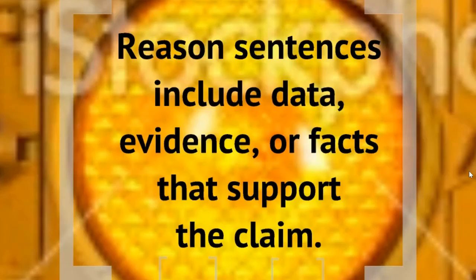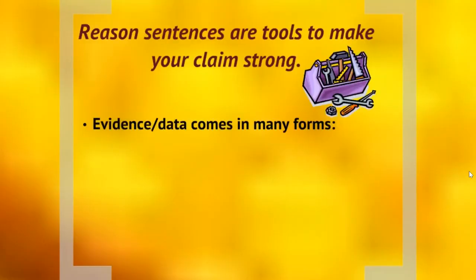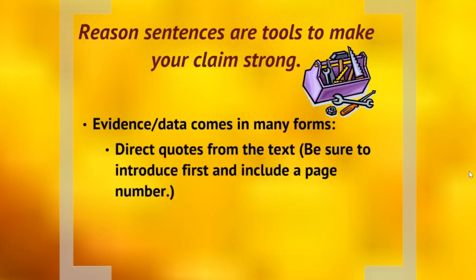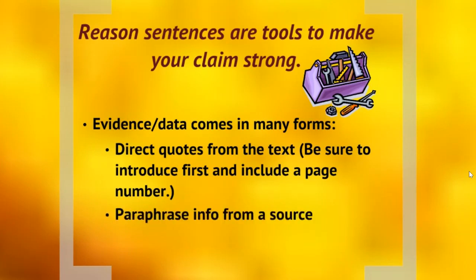So what do we do? We need reason sentences, we need data, we need evidence — textual evidence and support. Data comes in many forms: direct quotes from movies or literature, paraphrased info from a source. Secondary sources are important for this class — you need to show how you can do academic research as part of the university requirements. Give me facts, testimonials, and so forth.